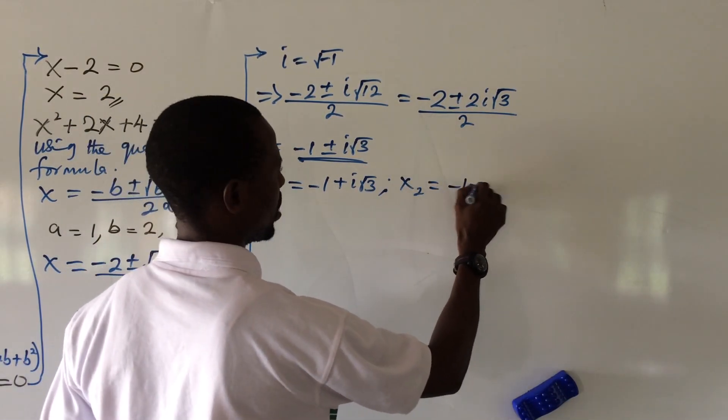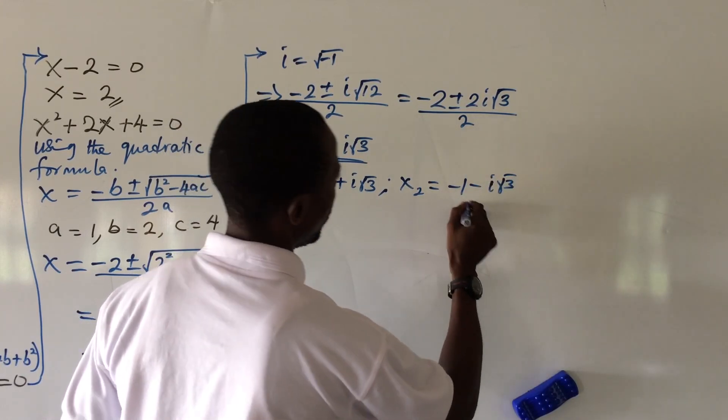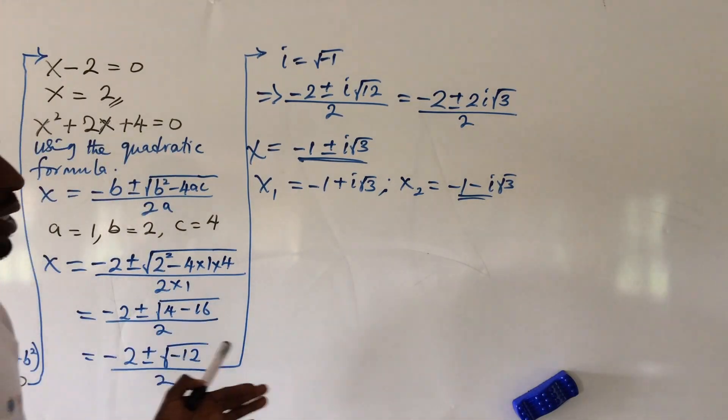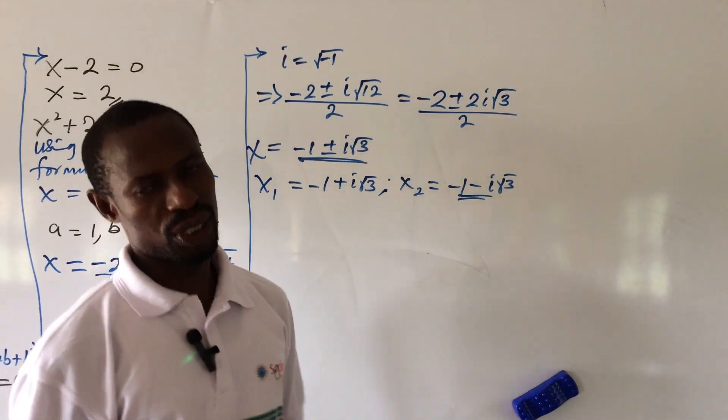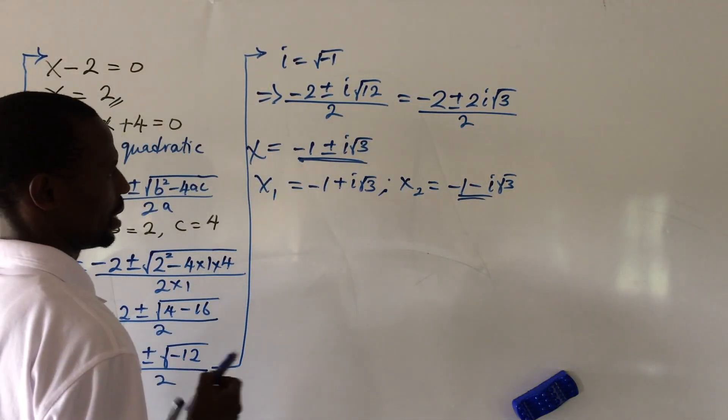Then x2 is equal to minus 1 minus i root 3. So from here, what then is the solution to this expression?